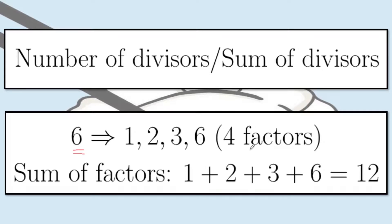The convention here — we're just going to take divisors to be positive. Although some references would explicitly say 'positive divisor,' I'm just going to call it a divisor. So the positive integer 6 has 4 factors or 4 divisors: 1, 2, 3, and 6. Simply because 6 is divisible by 1, by 2, by 3, and by 6.